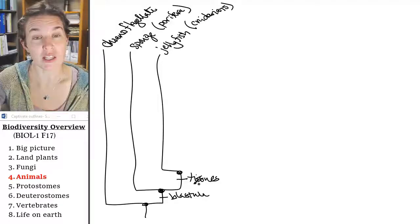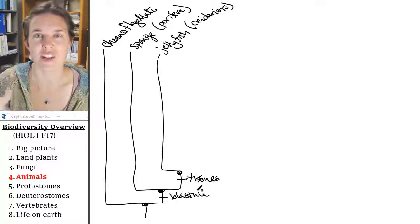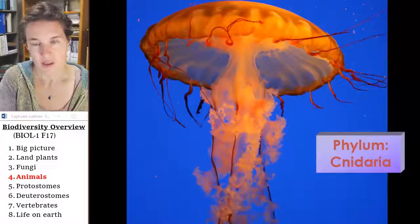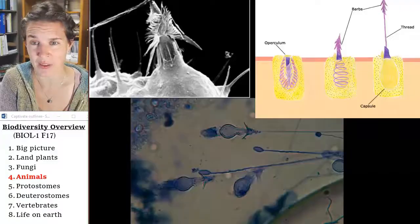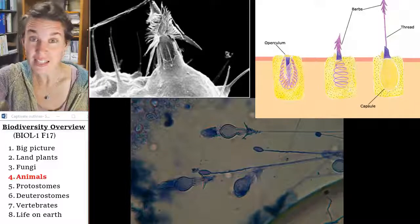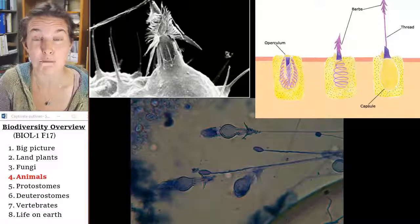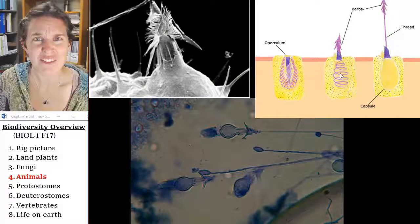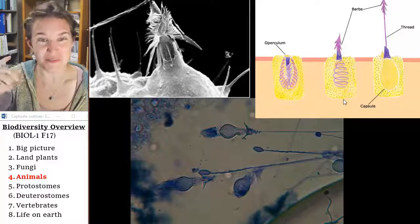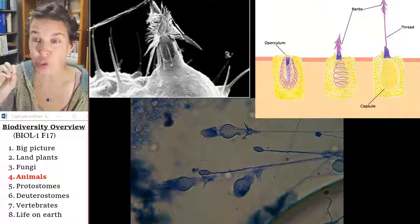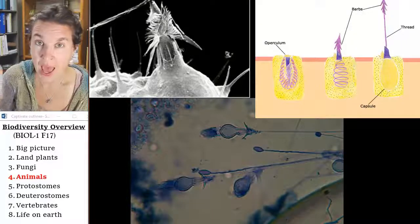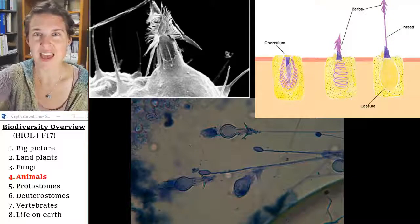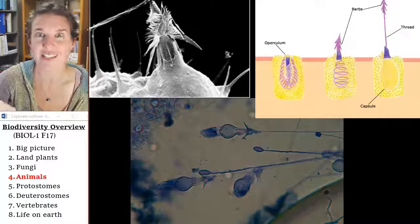Cnidarians also include sea anemones, which are stingy-type things, and all of these guys have tissues. These cnidocytes are cellular organelles that are basically poisoned arrows — there's poison on the tip of these arrows with strings attached to them. The jellyfish, sea anemone, or coral will shoot this poison arrow at their prey, and since it's attached to a string, they will paralyze their prey and then wind in that string and reel in their prey and eat it.